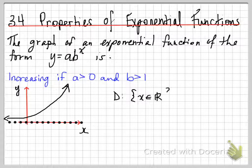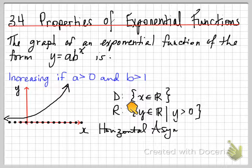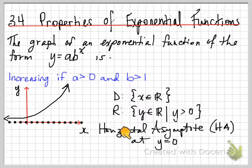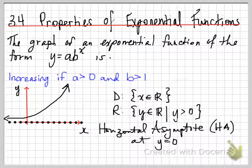The domain of such an exponential function is x belongs to the reals, and the range is y belongs to the reals such that y is greater than 0. Because the horizontal asymptote, which is at y equals 0, is underneath the actual graph. So the y values are everything above 0, with 0 being the asymptote.